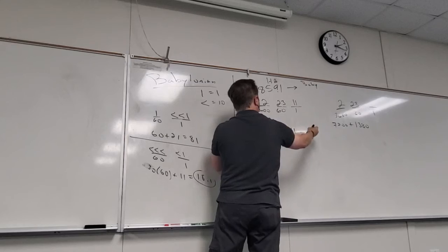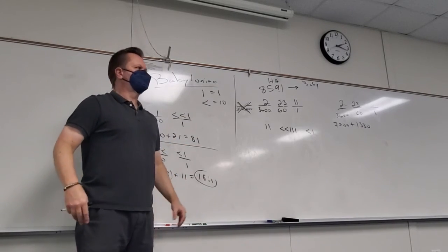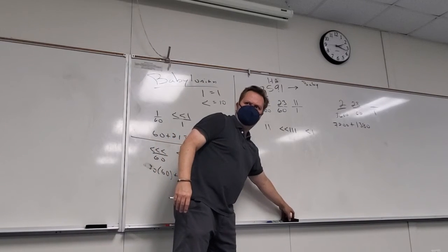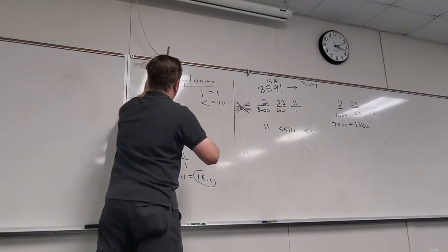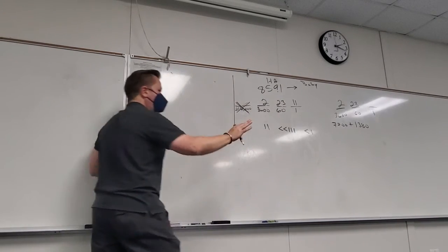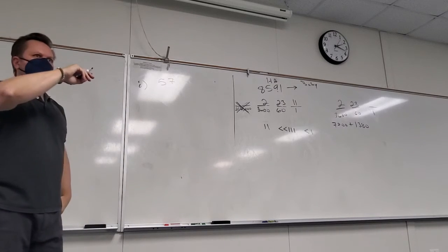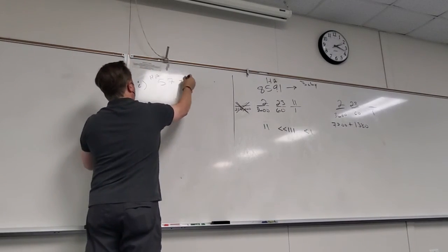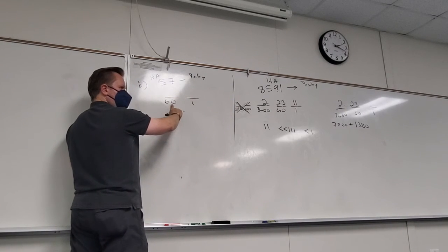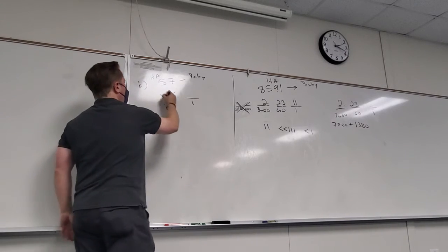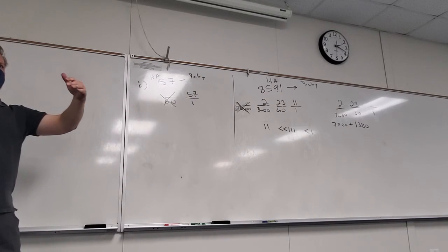Here, how many 3600s can I use to create part of this? Another way to say that is how many times does 3600 go into 8591? So how many 3600s fit into 8591 with some left over? Two. Yes? And what is that so far? What is twice 3600? 7,200.